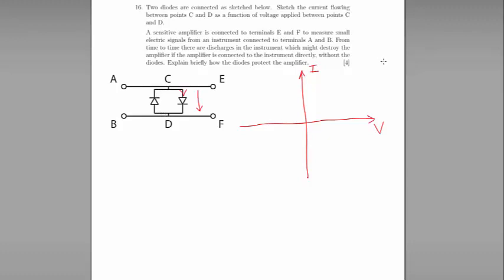And we should recall the shape of the VI curve for a diode is like this. So it doesn't conduct, and then suddenly it starts conducting and increases steeply.